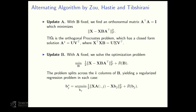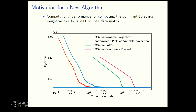This algorithm is not necessarily very scalable. For a relatively small problem — extracting the dominant 10 sparse principal components — coordinate descent requires quite some computational time to converge. This motivated us to embed sparse PCA into the variable projection framework, and then use randomized methods to further accelerate the algorithm.